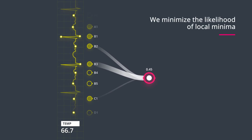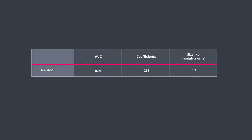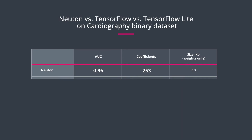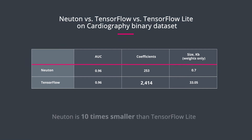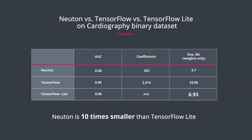This is especially important when building small models. In our example, we've achieved an area under the curve value of 0.96 with only 253 coefficients. Meanwhile, achieving the same accuracy with TensorFlow requires significantly more coefficients. Newton is even 10 times smaller than TensorFlow Lite.